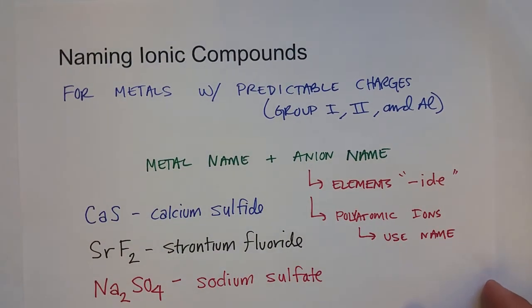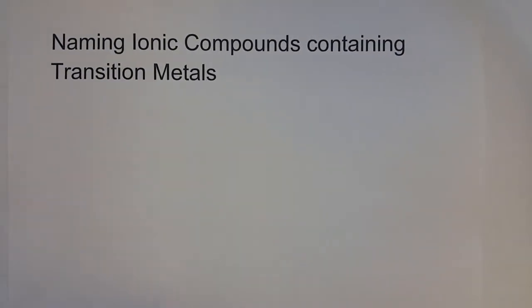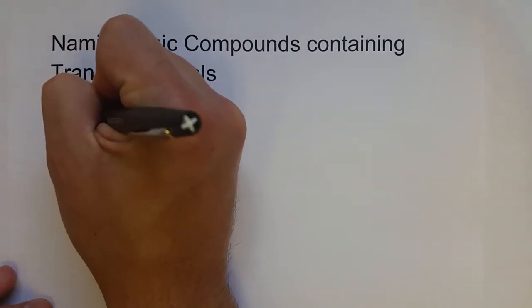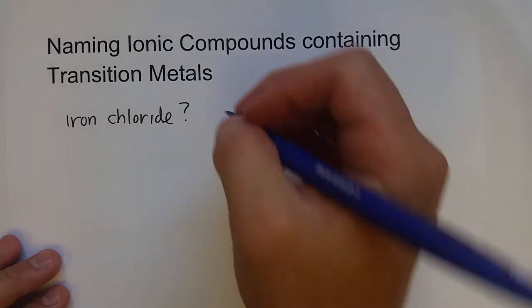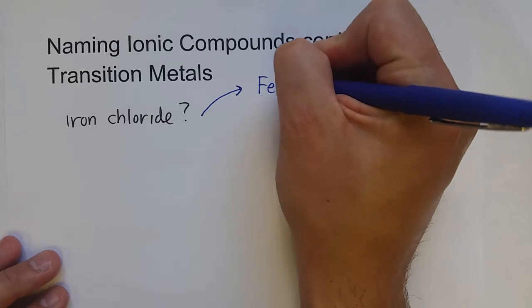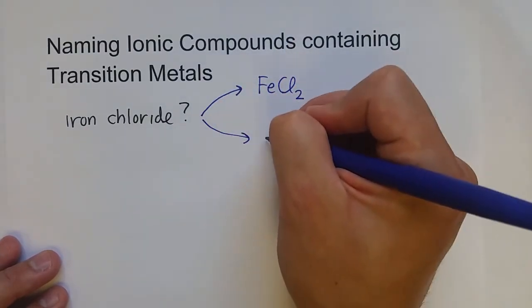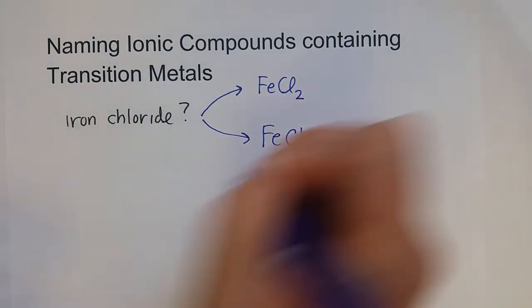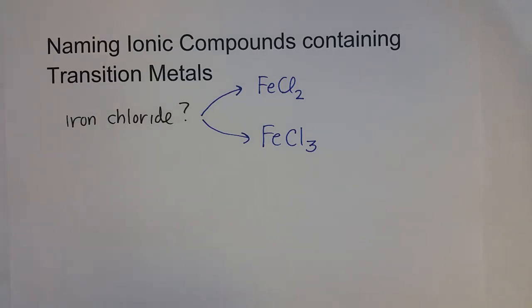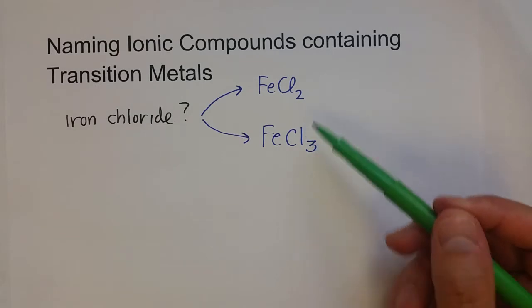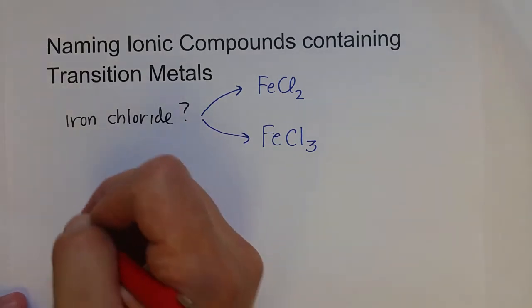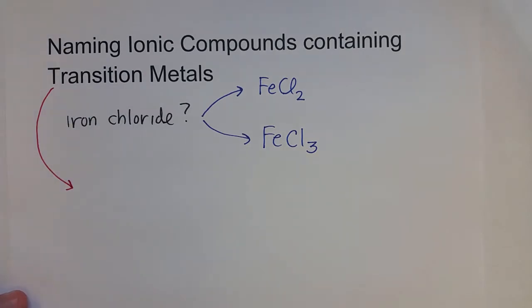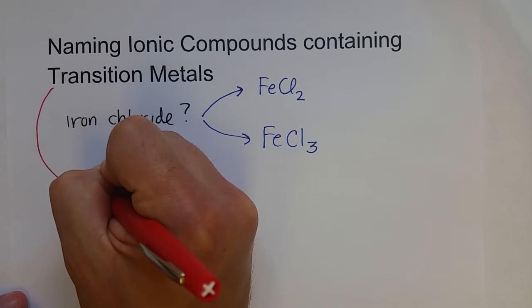Naming ionic compounds that contain transition metals can be a little different. For instance, I can't just say 'iron chloride,' because there's more than one iron chloride compound — I could be talking about FeCl2 or FeCl3. The reason is that iron doesn't form a predictable charge; it can do a couple of different things.